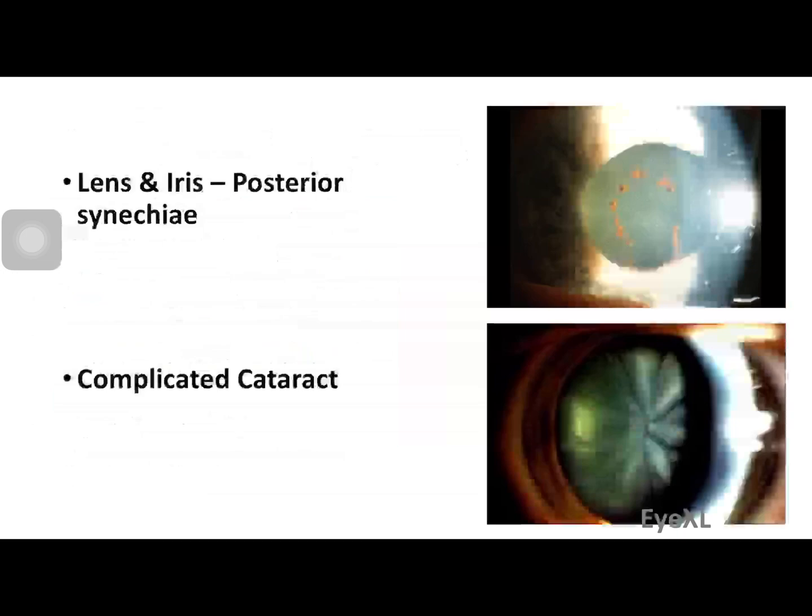When inflammation is strong enough, adhesions form between the posterior surface of the iris and the lens — called posterior synechia. In the image shown, the synechia have been broken pharmacologically or naturally, and the red or brownish ring visible on the lens is the remnant of posterior synechia, indicating they occurred in the past. If the lens is compromised by posterior synechia, a complicated cataract will ensue.